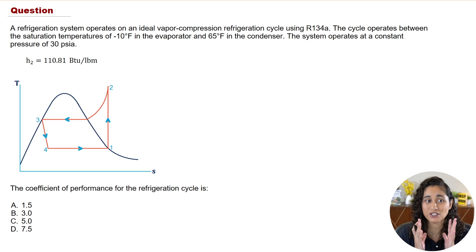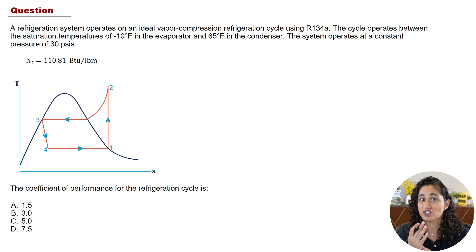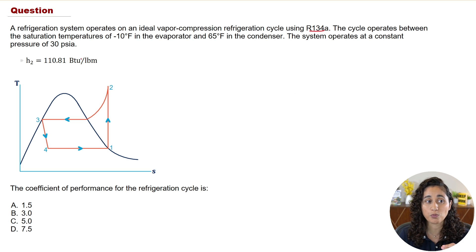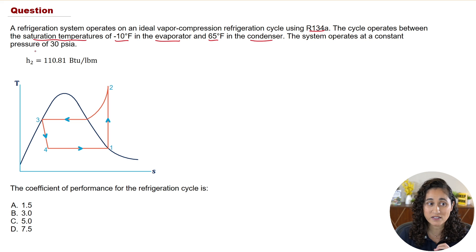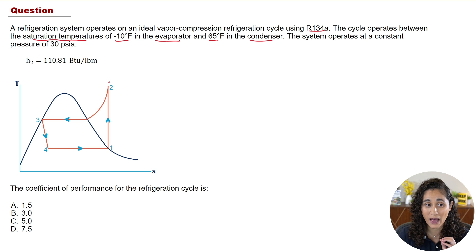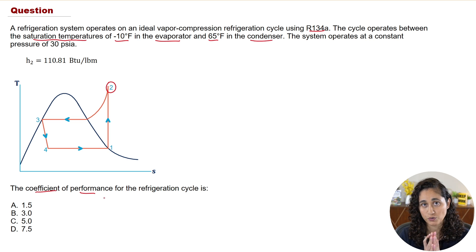We have a refrigeration system that operates on an ideal vapor compression refrigeration cycle using R-134A. The cycle operates between the saturation temperature of minus 10 degrees Fahrenheit in the evaporator and 65 degrees Fahrenheit in the condenser. The system operates at a constant pressure of 30 psi. We are given the enthalpy at point 2, and we want to determine the coefficient of performance for the refrigeration cycle.